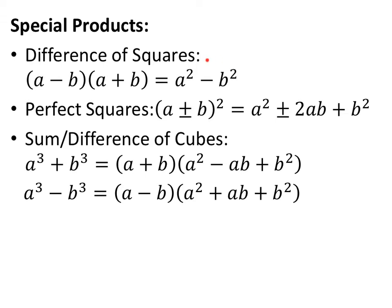If you have a perfect square minus a perfect square, it factors into the square root of the first term minus the square root of the second term, times the square root of the first term plus the square root of the second term. Sometimes you'll recognize them as perfect squares, sometimes you won't. If you don't recognize it, you can just use your normal quadratic factoring.